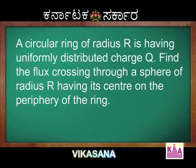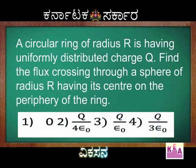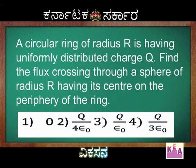The options are: 1) 0, 2) Q divided by 4ε₀, 3) Q divided by ε₀, 4) Q divided by 3ε₀.